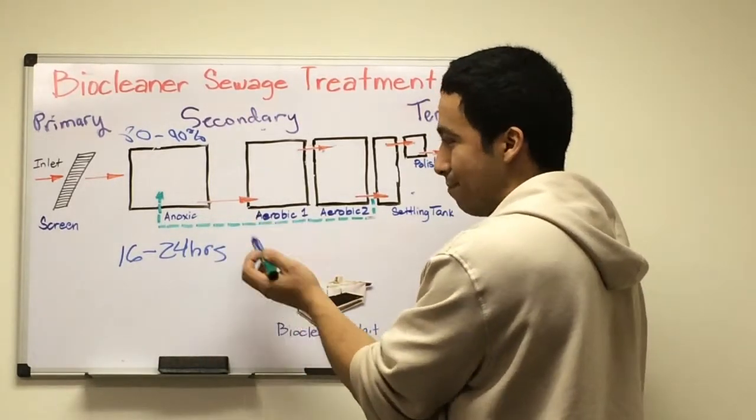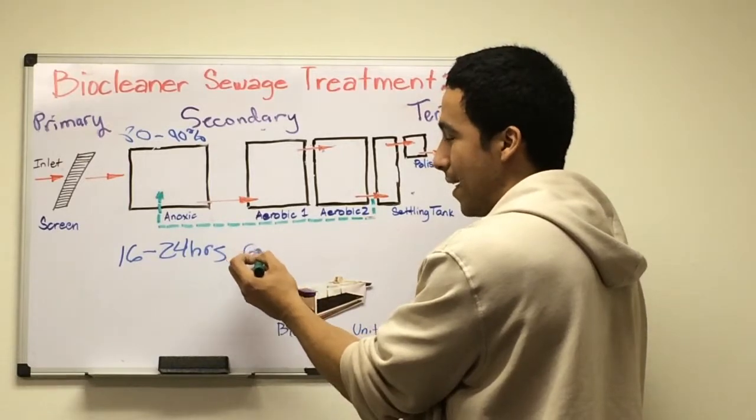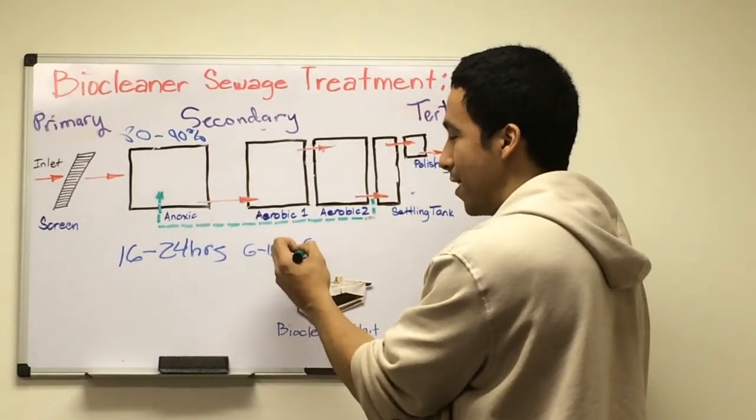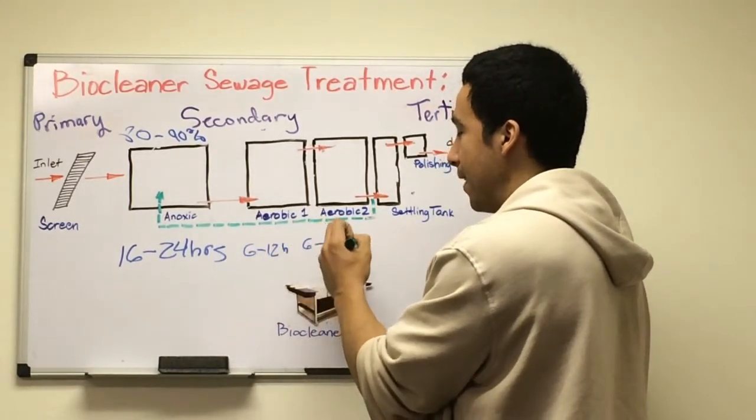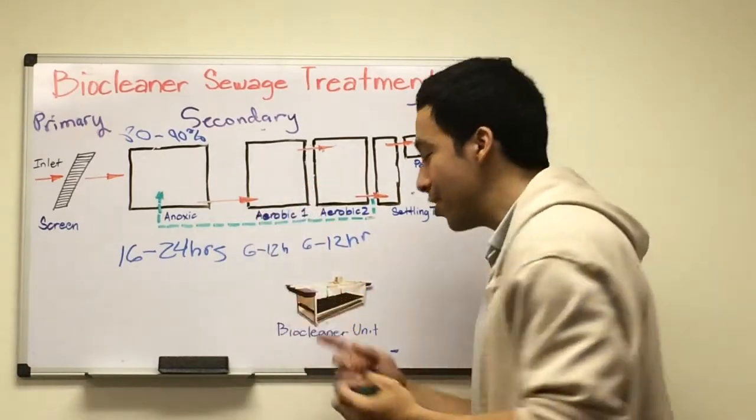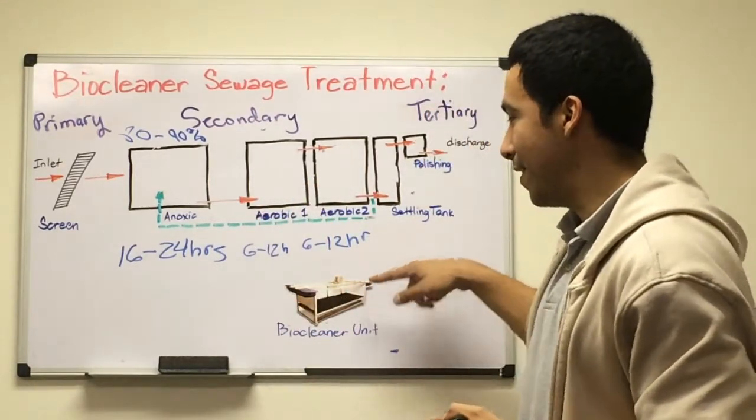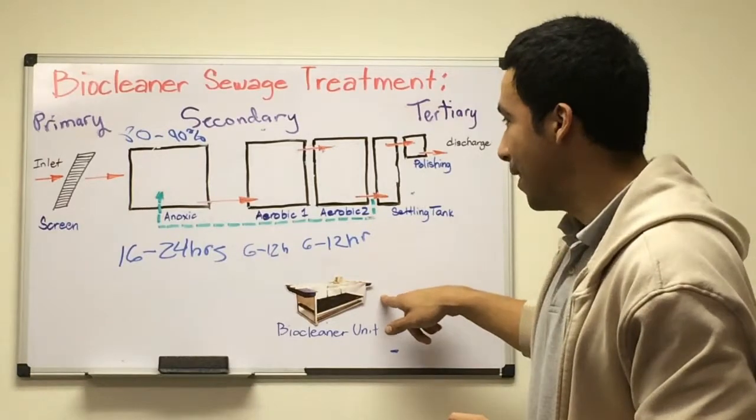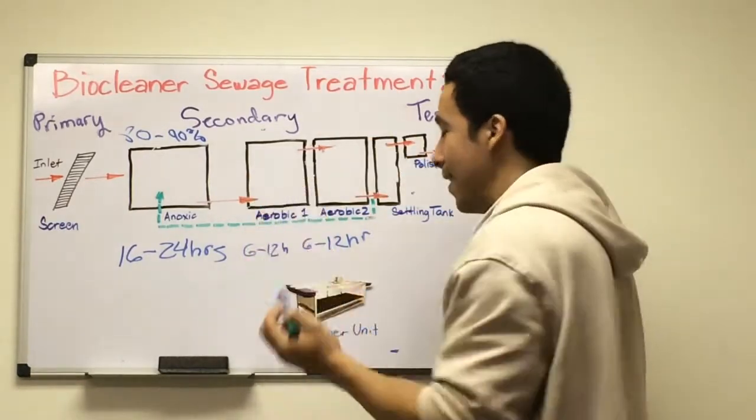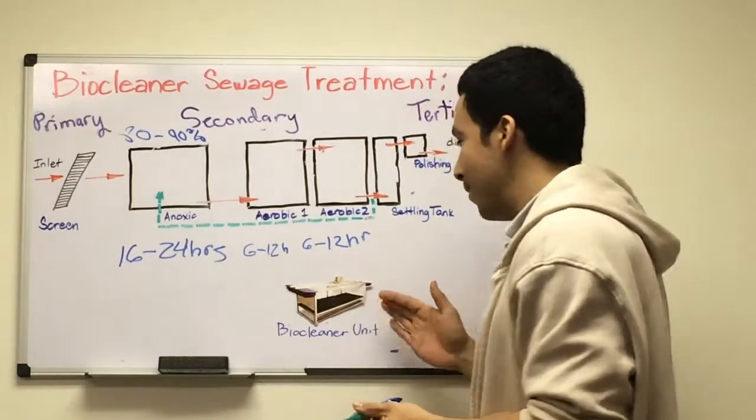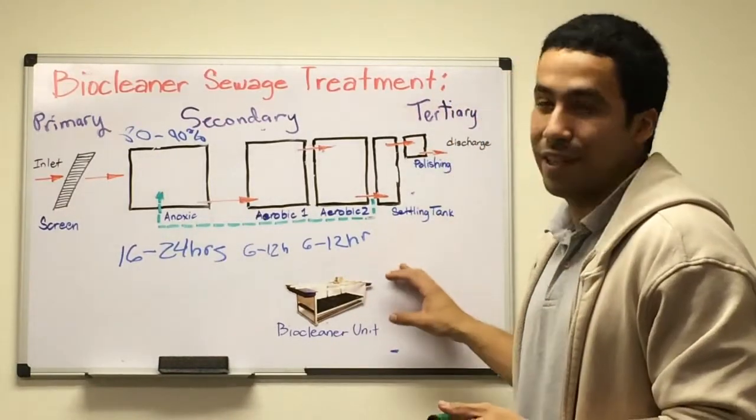Each of these aerobic tanks can vary from 6 to 12 hours of retention time each. In these tanks, we're going to install our biocleaner units. These are our portable bioreactors which are going to be installed in both of these tanks.